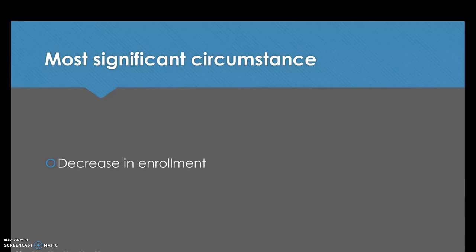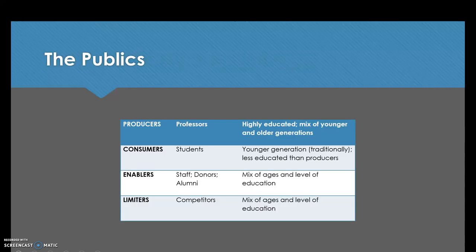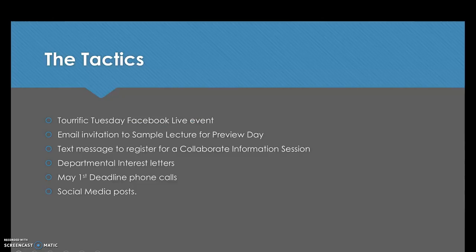The most significant circumstance that the college faces is a decrease in enrollment, and the rest of this audit will focus on that specific situation. To combat this threat, you must understand who your publics are. Publics can be divided into four categories: producers, consumers, enablers, and limiters. For the College of Liberal Arts and Social Sciences, the producers are professors, the consumers are students, the enablers are staff, donors, and alumni, and the limiters are competitors, to name a few.